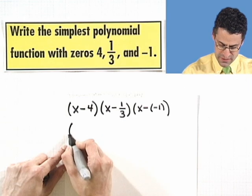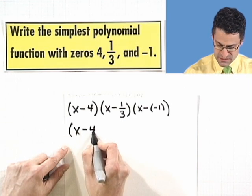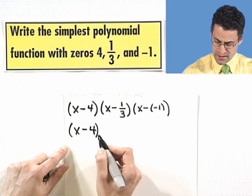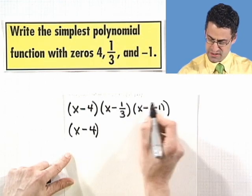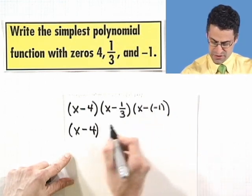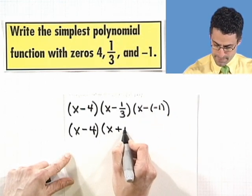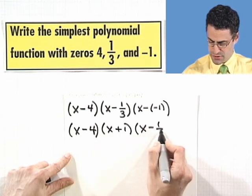And so what do we see here? Well, I'm going to write this term, (x - 4). Actually, just for fun, since I can rearrange multiplication, let me put this term next, which is (x + 1) and then (x - 1/3).